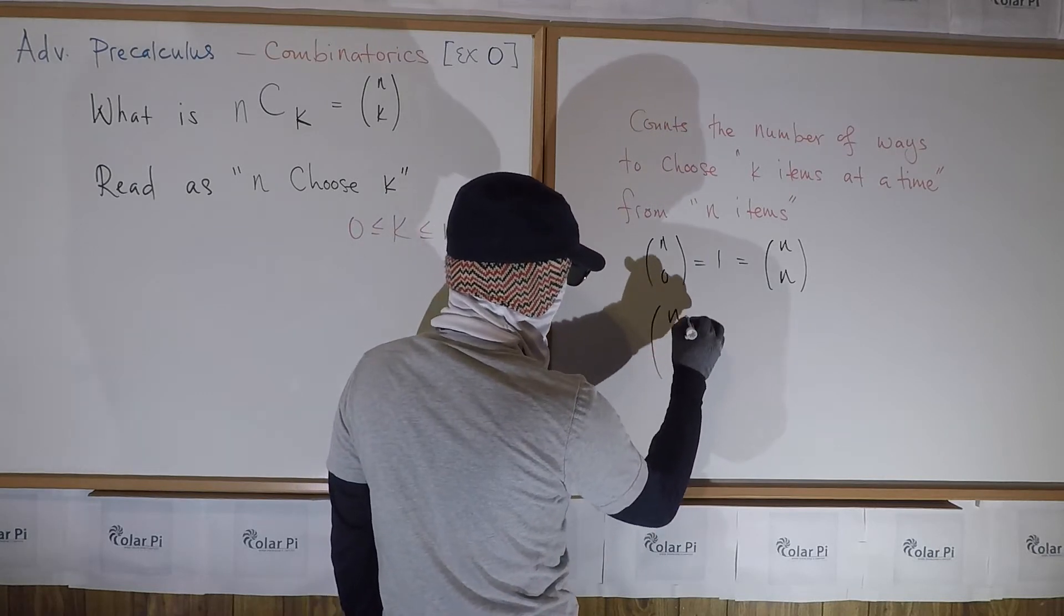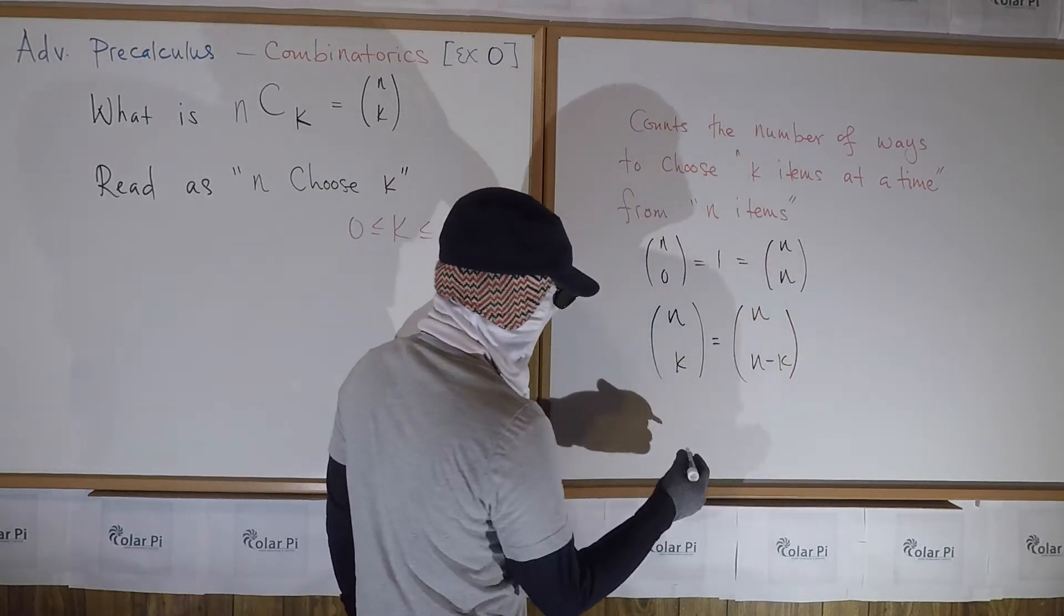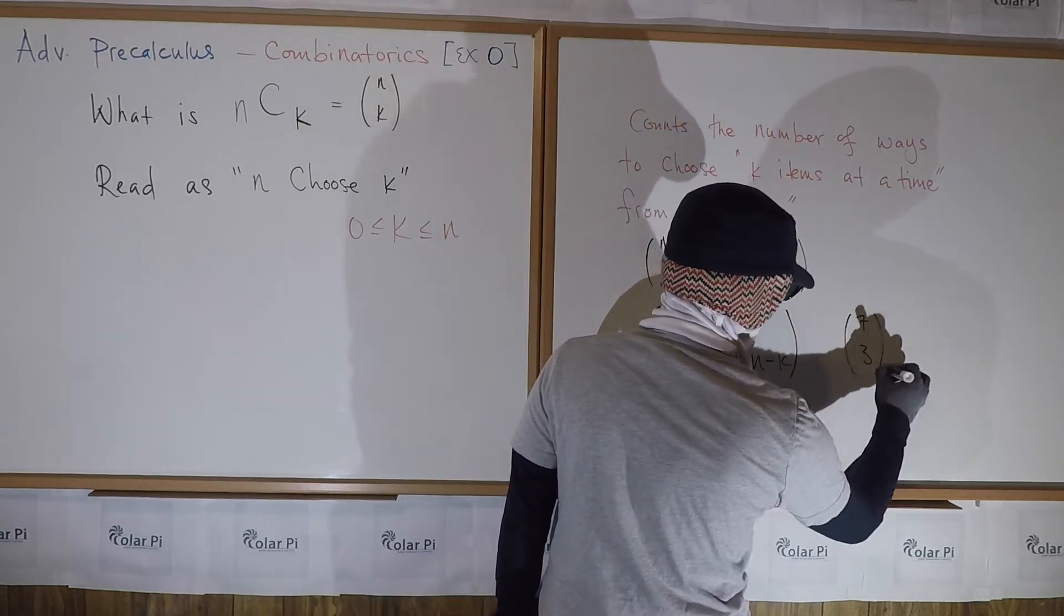Perhaps we'll dedicate a video to this other result, but it also turns out that n choose k is the same as n choose (n minus k). So for example, we're saying here that 7 choose 3 is equal to 7 choose 4.